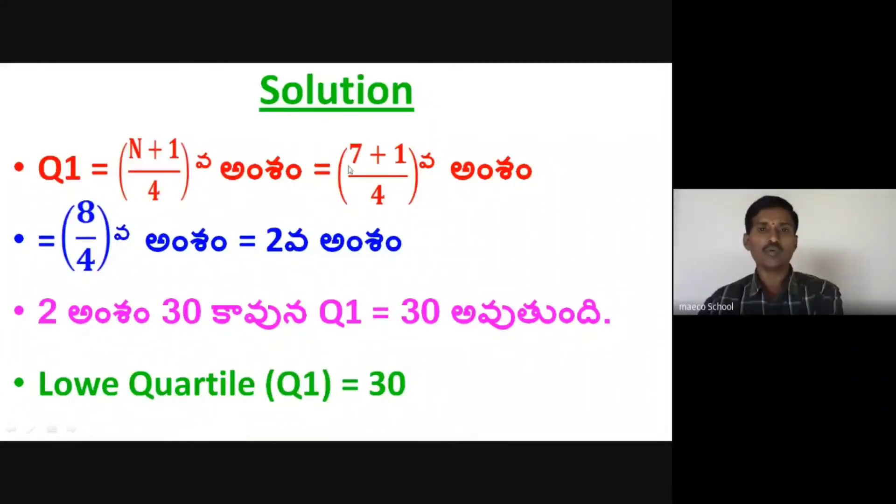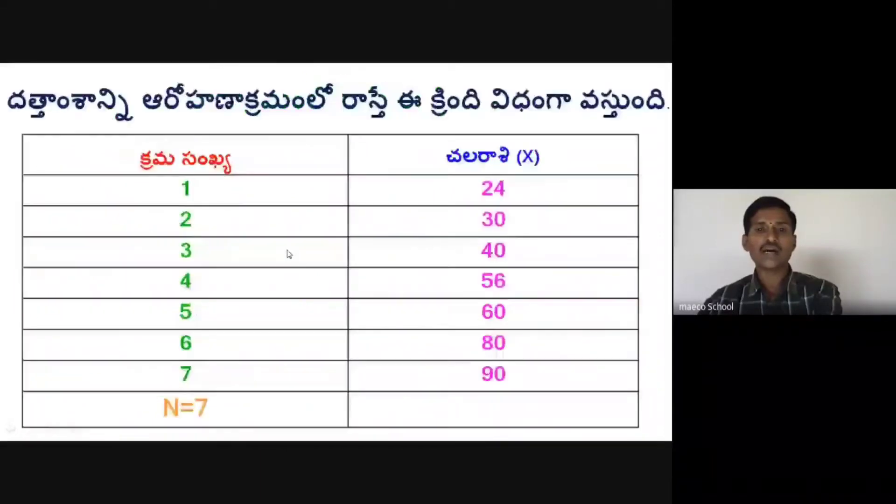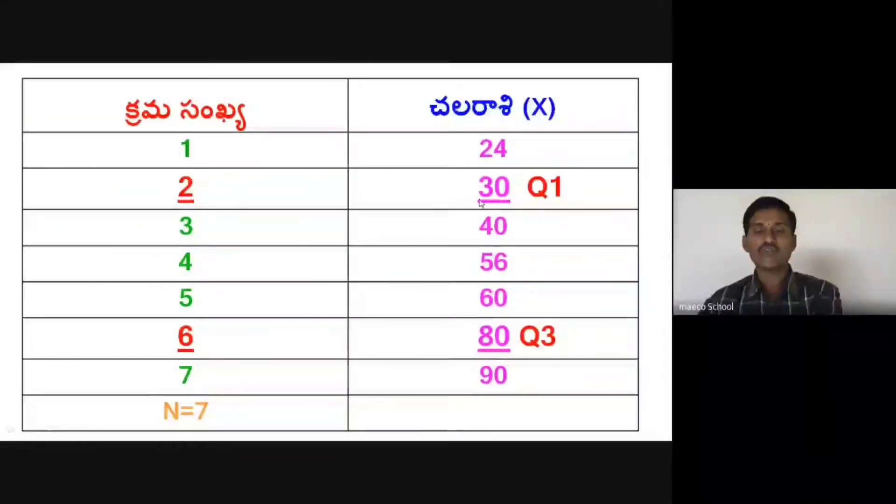This equals 8 by 4th item. The size of 8 by 4th item, which simplifies to the 2nd item. So Q1 is the second item in the series.